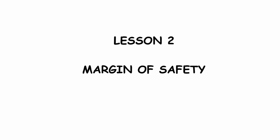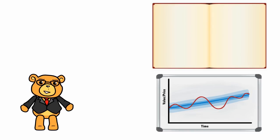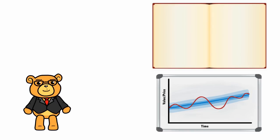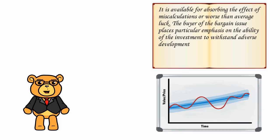Lesson 2: Margin of Safety. This brings us on to margin of safety. Graham recognized that any estimate of intrinsic value would be flawed. Much of the value of a security is based on future results, results which are inherently unknowable. This is why he always insisted on a margin of safety between the estimated intrinsic value and the market price paid — it is available for absorbing the effect of miscalculations or worse than average luck.